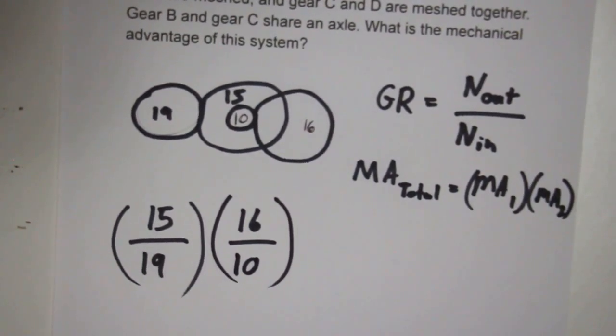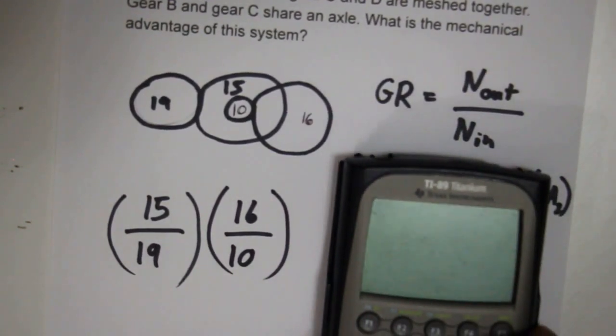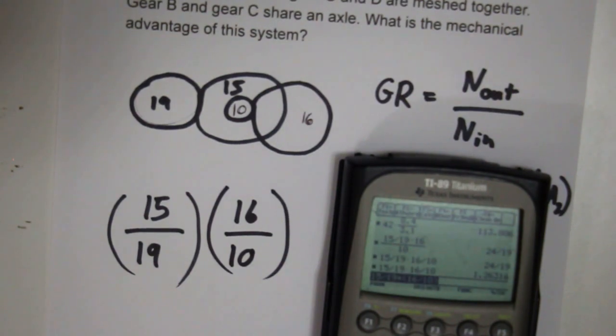In your calculators, it makes sense to go ahead and type in the parentheses: 15 divided by 19, times parentheses, 16 divided by 10. And we get an answer, in this case originally as a fraction, and again as 1.26.